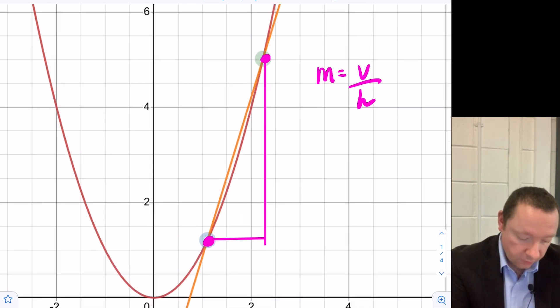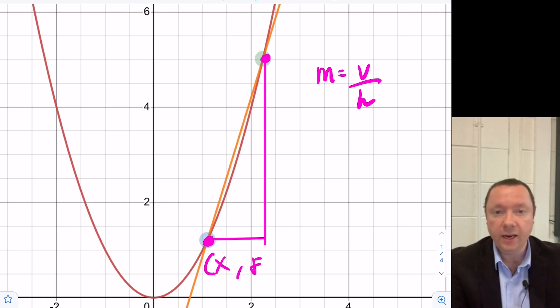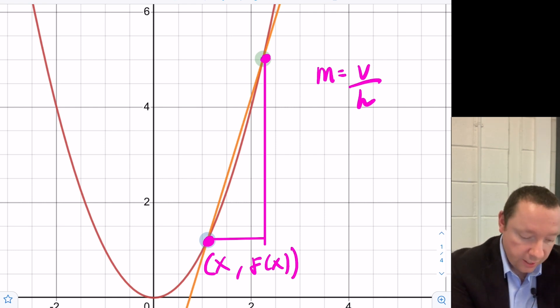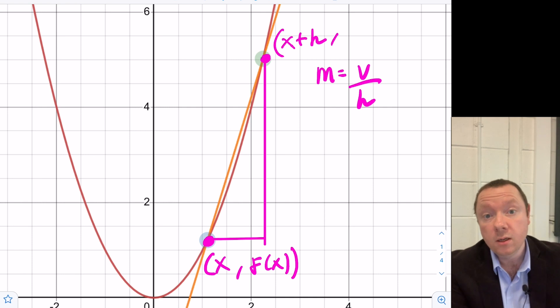So defining our points, this first point I went along x and then if we put x into the function we get f of x back for our second part of the point. Our second point though, I've went along x plus a little bit, let's call it h.